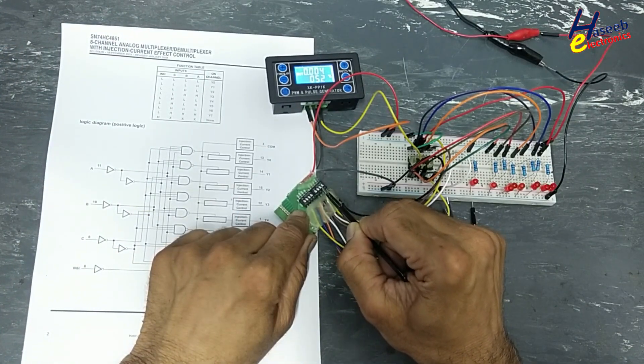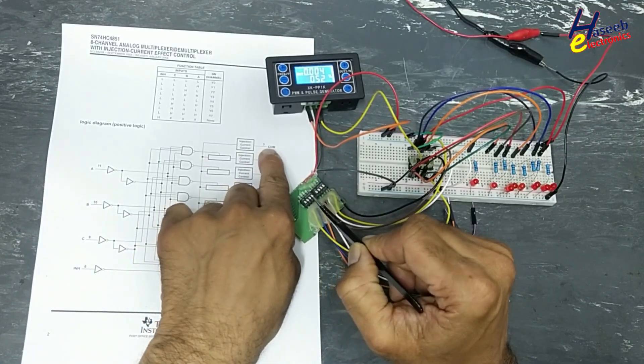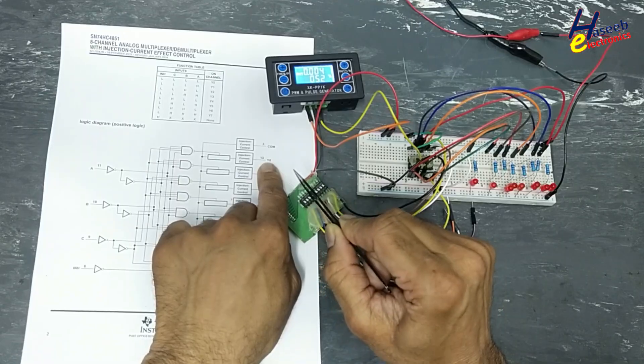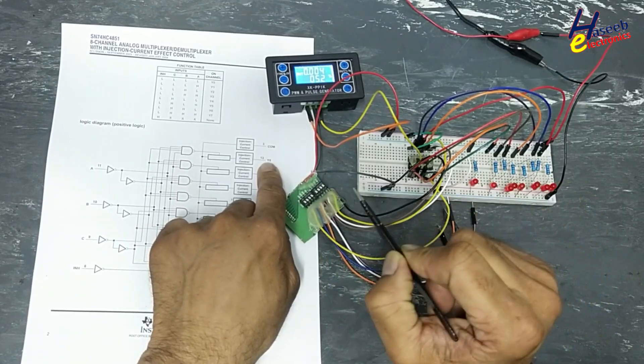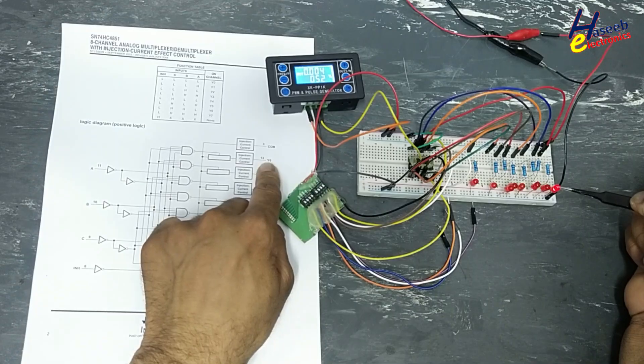A is low, B is low, C is low. Signal present at pin number three is reaching Y zero. So the first register is providing output, that is Y zero. We are receiving output from pin number 13.